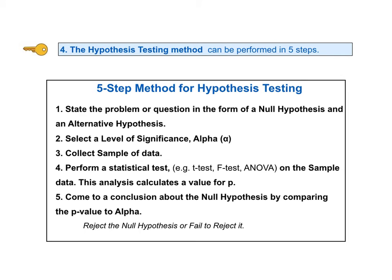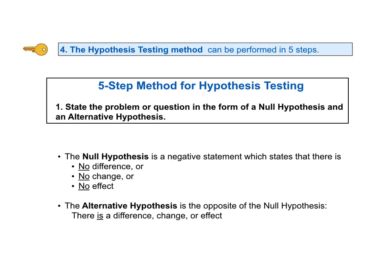There are five steps in our method for hypothesis testing. We'll cover each of these steps in turn. Step one is to state the problem or question in the form of a null hypothesis and an alternative hypothesis. We just covered how to state a null hypothesis. The alternative hypothesis can be stated as the opposite of the null hypothesis — that is, there is a difference, change, or effect. It should be noted that some experts disagree with defining the alternative hypothesis as the opposite of the null hypothesis, and some experts disagree that an alternative hypothesis should be used at all. These issues will be discussed in the video on alternative hypothesis. We'll also show how the alternative hypothesis can be especially useful in one-tailed tests.